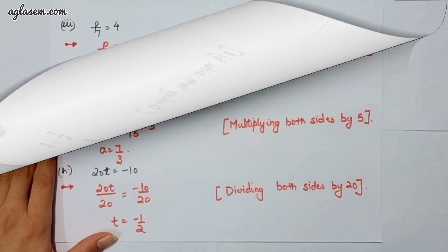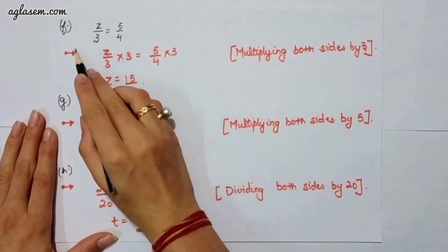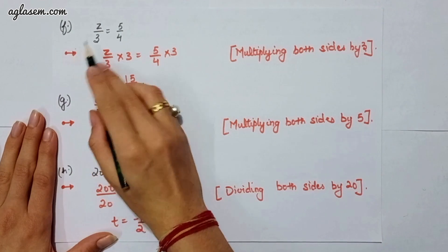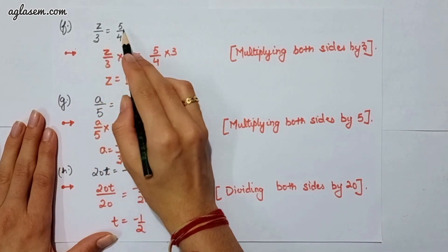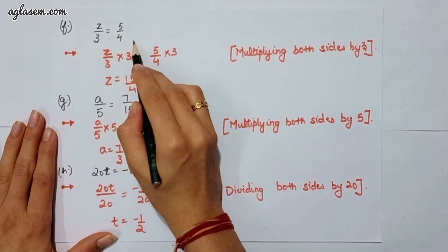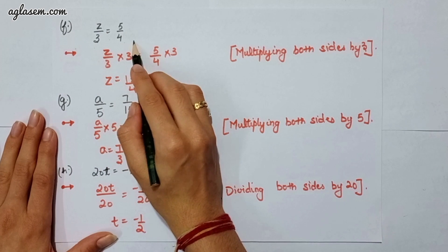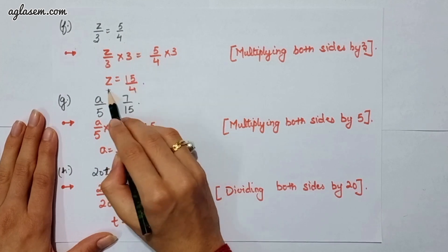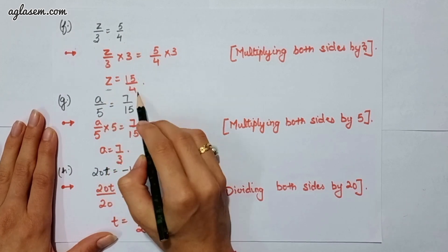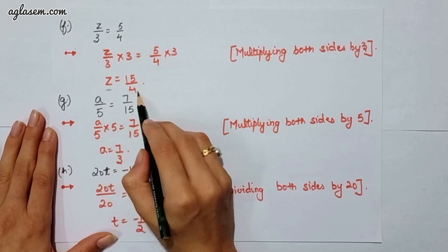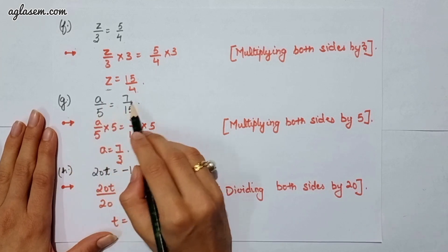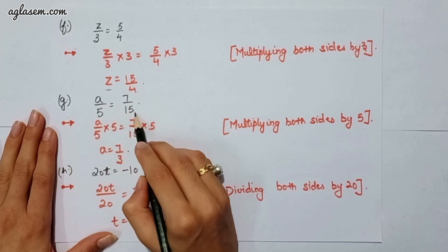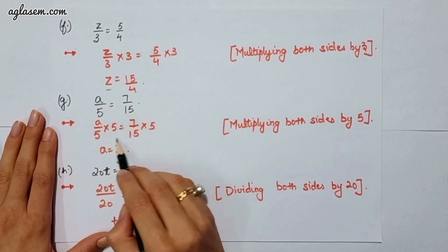Moving to the sixth part, which says z divided by 3 is equal to 5 upon 4. Here we have to multiply both sides by 3, so z will be 15 upon 4. The g part says a divided by 5 is equal to 7 upon 15. Here we have to multiply both sides by 5, therefore a will be 7 upon 3.